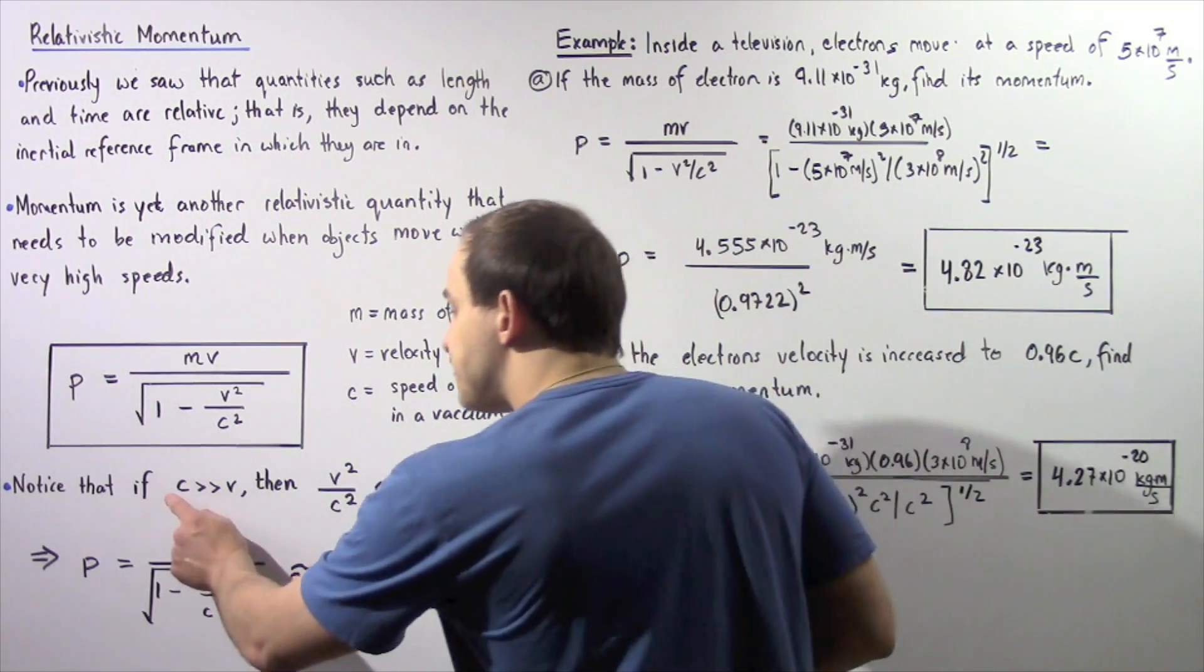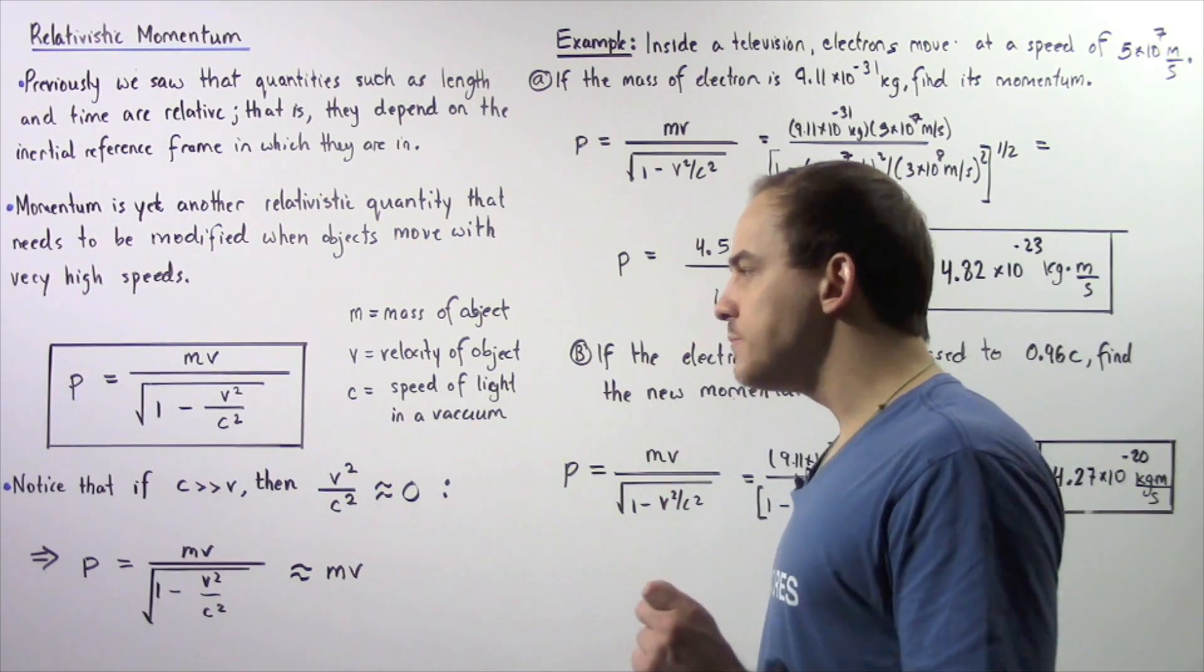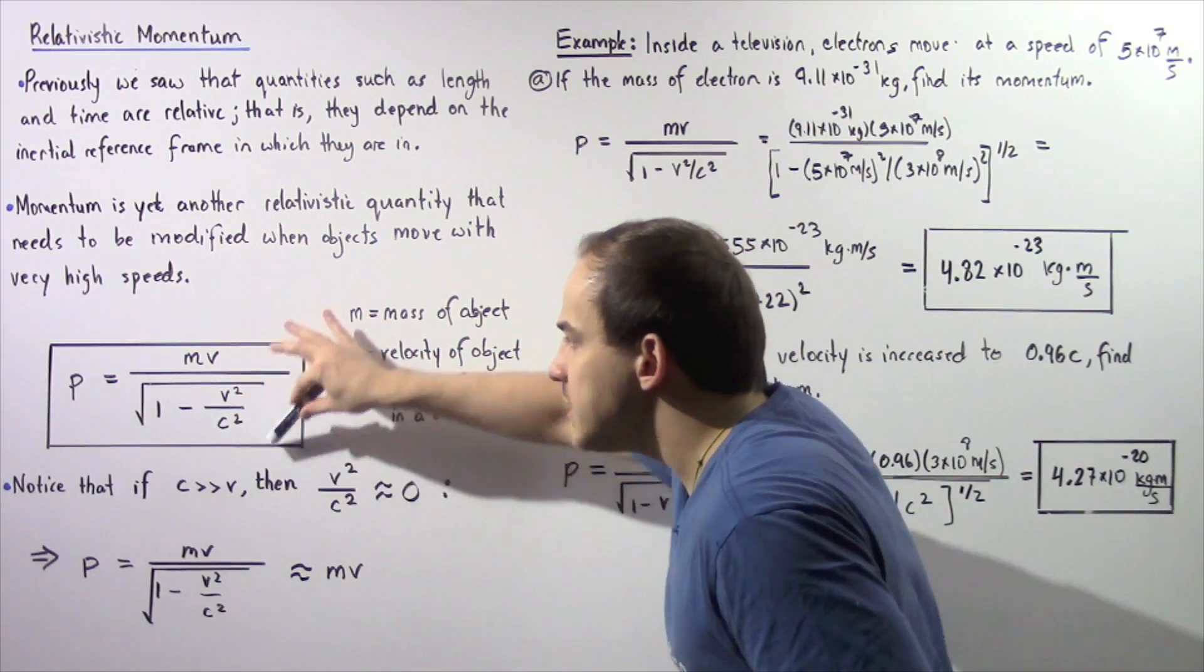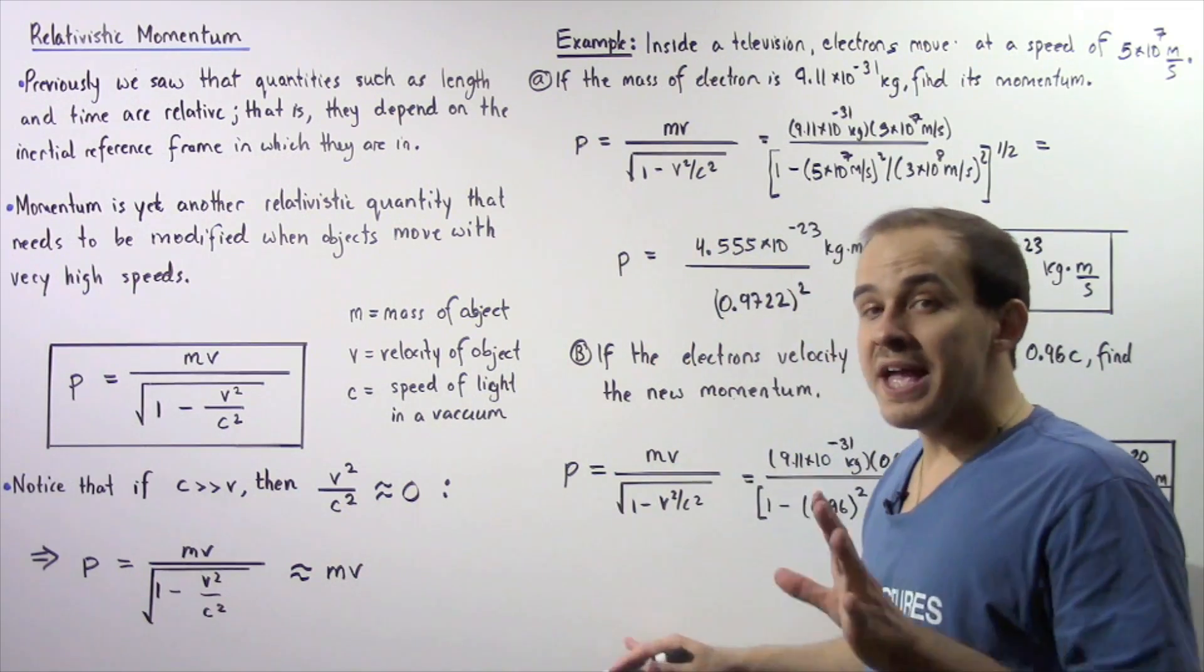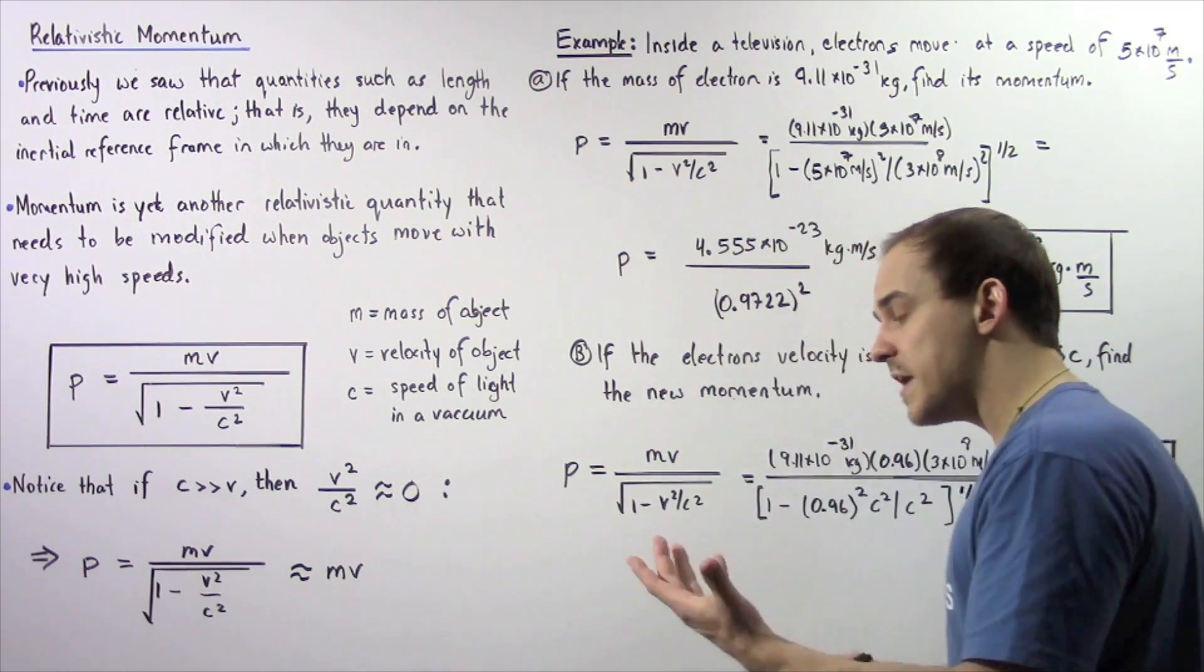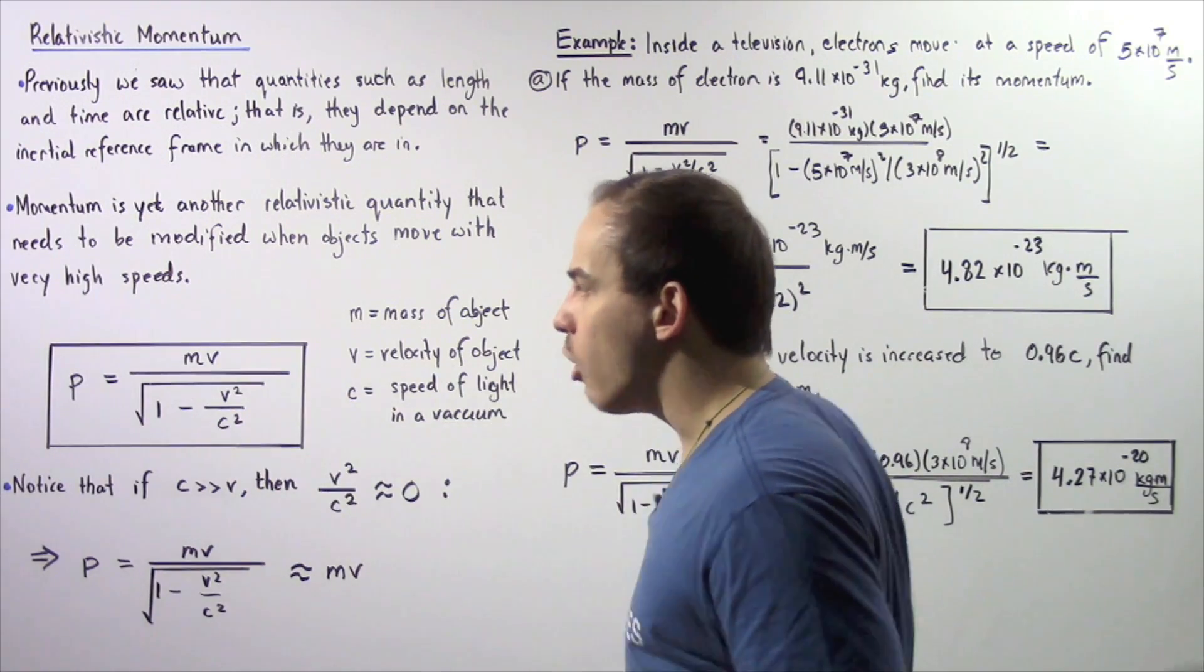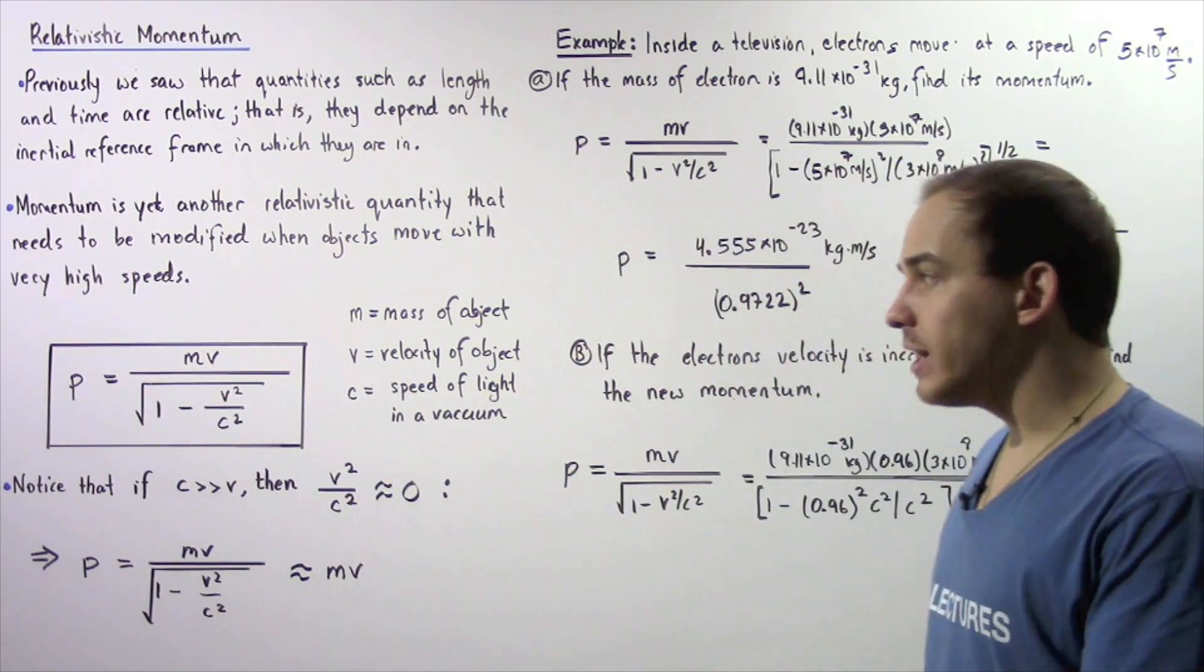Now notice, if the speed of light c is much greater than the velocity of that object, for example if v is 10 meters per second, then we see that this ratio inside the radical, v squared divided by c squared, is approximately equal to 0. It's equal to a very small number, so we can approximate this to be 0, and 1 minus a very small number gives us about 1, and the square root of 1 is 1.